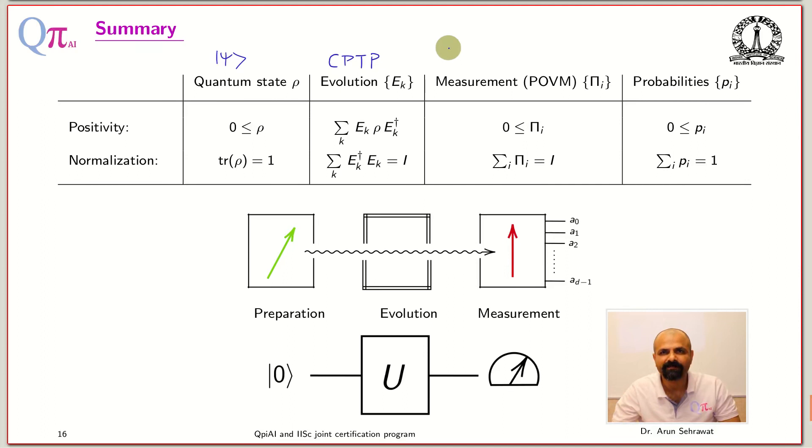Projective measurement or measurement in a basis B_A is a special case of more general measurement. More general measurement is called POVM, positive operator valued measure, which is a collection of positive operators and they sum and give you identity, which is a completeness relation meaning that every measurement has a result.